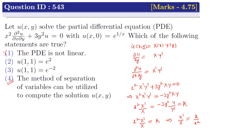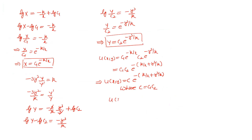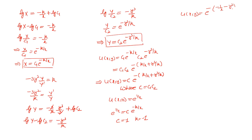Now we find the value of u at (1,1). Applying the initial condition u(x,0) = e^(1/x): substituting y = 0 gives e^(1/x) = c·e^(−k/x). Comparing both sides: c = 1 and k = −1. Substituting back: u(x,y) = e^(−(−1)/x − y³/(−1)) = e^(1/x + y³). Therefore u(1,1) = e^(1+1) = e².